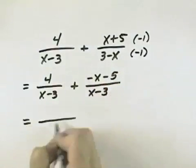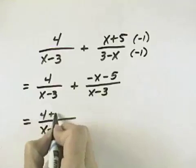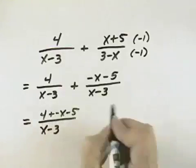So now I can see that I have a common denominator of x minus 3, and so if I add the numerators, I can simplify.